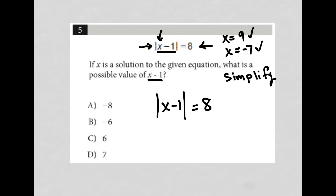There are only two ways for that to happen. That is, if x minus 1 is equal to positive 8, because the absolute value of 8 is equal to 8. Then the other option is if what's inside the absolute value is negative 8. Why would that be the case?